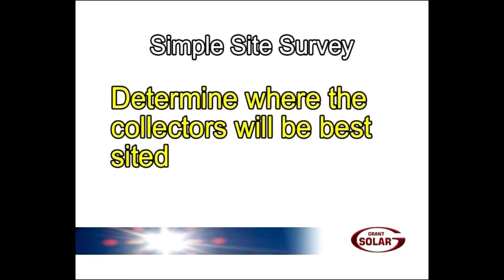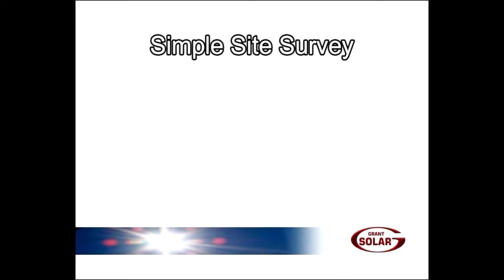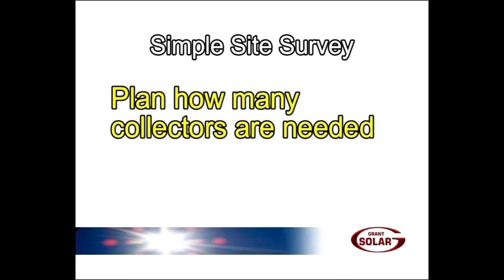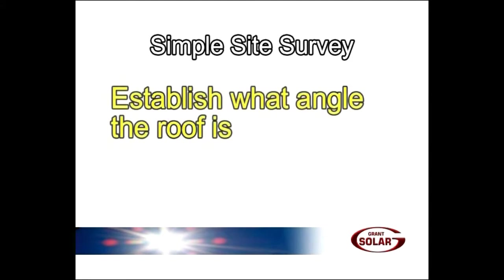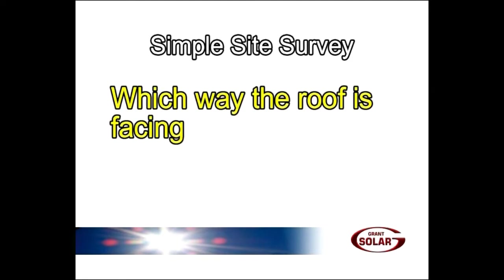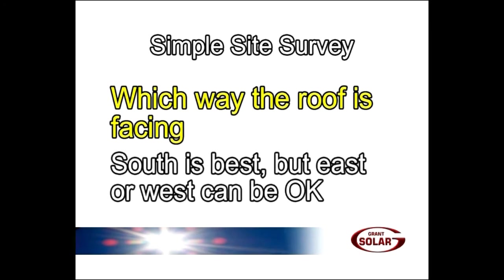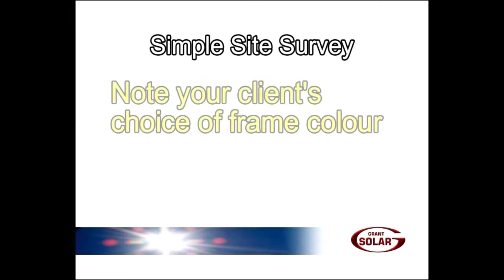Determine where the collectors will be best sited. Plan how many collectors are needed. This can be calculated based on 1 to 1.3 square meters of collector per person in the house. Establish what angle the roof is and which way the roof is facing. South is best, but east or west can be okay.